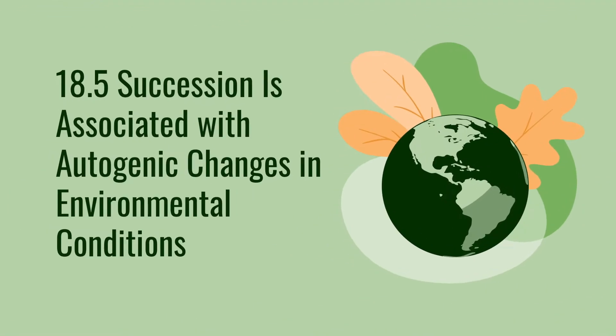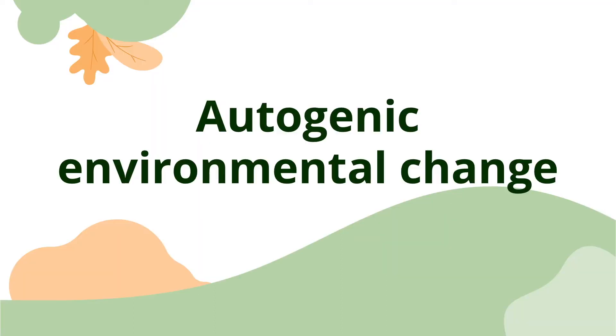Succession is associated with autogenic changes in environmental conditions. The changes in environmental conditions that bring about shifts in the physical and biological structures of communities across the landscape are varied. They can, however, be grouped into two general classes: autogenic and allogenic.